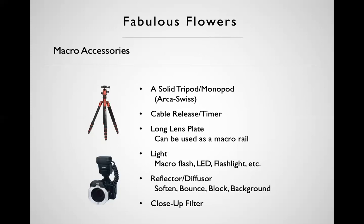I like small five-in-one reflectors: silver, gold, black, white, and a translucent diffuser panel. You can hold the diffuser between the light and the subject to soften light, use the black to absorb, white or silver to bounce, or even use them as a background or wind block. One word of advice: don't buy a giant one. You don't want to carry something huge on the trail, your subject is only a few inches tall, and a large reflector will catch the wind.